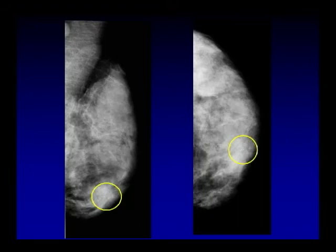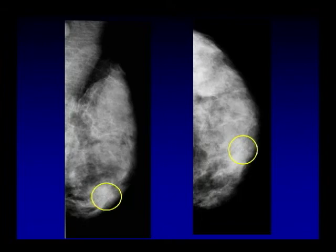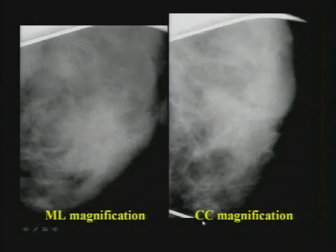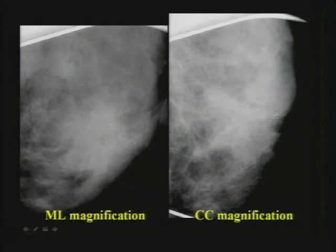The BI-RADS assessment categories are: 0 incomplete, 1 negative, 2 benign, 3 probably benign, 4 suspicious, 5 highly suggestive of malignancy, and 6 known biopsy-proven malignancy. Here is her BI-RADS density 4 extremely dense breast — MLO on the left, CC on the right. Her lump is in the lower inner breast. Spot compression magnification shows calcifications, and some may even say a mass. We at least have calcifications.